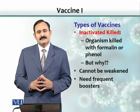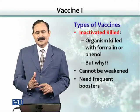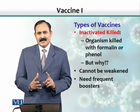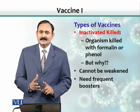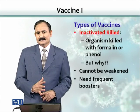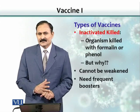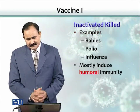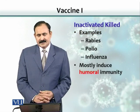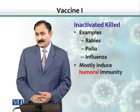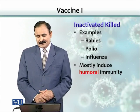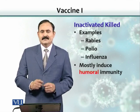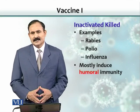Killed vaccines cost more, and the quality of immunity or immune response is not very good. Also, killed vaccines preferentially induce humoral immune response, not much cellular immune response. Examples of inactivated killed vaccines are rabies, polio, and influenza.